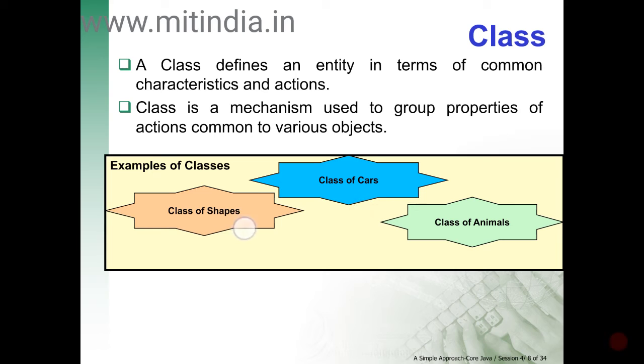Examples include: class of cars, class of shapes, class of animals. A class is a blueprint for a group of objects that have common properties and common behaviors.